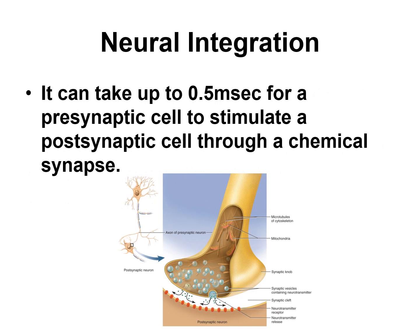Appreciate that it can take up to half a millisecond for a presynaptic cell to stimulate a postsynaptic cell at a chemical synapse. When you take into consideration the action potential coming down, then opening calcium channels, and then the vesicles containing neurotransmitter merging and dumping the neurotransmitter into the synaptic cleft, the neurotransmitter diffusing through the synaptic cleft, and finally binding receptors on the postsynaptic cell — that can take up to half a millisecond, a significant amount of time.